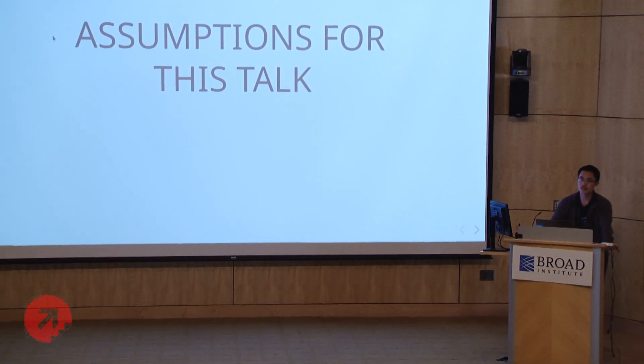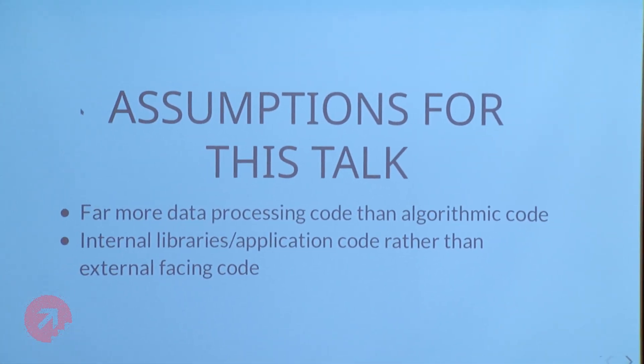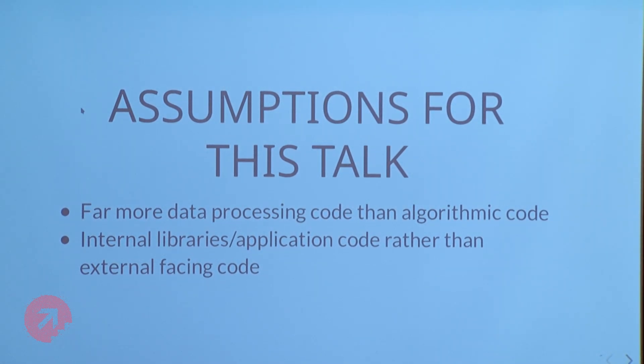Before I dive in, I want to talk about some assumptions I'm making about your codebase. First, I'm assuming it contains a lot more data processing code than algorithmic code. Algorithmic code implements a mathematical formula or basic CS algorithm, but for most people in industry, the codebase is really about taking chunks of data, changing structure, recombining with other data, and persisting it somewhere. The second assumption is that a lot of the code is internal — either application code or internal library code. Some guidelines might change if you're developing an external library used by thousands of other users in the broader Scala ecosystem.